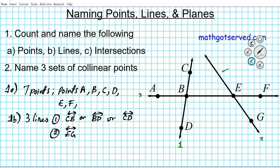For the third line going left to right, there are multiple ways to name it: we can call it line AB, line BE, line EF, or line AF. These are all possible ways to name this line going from left to right.